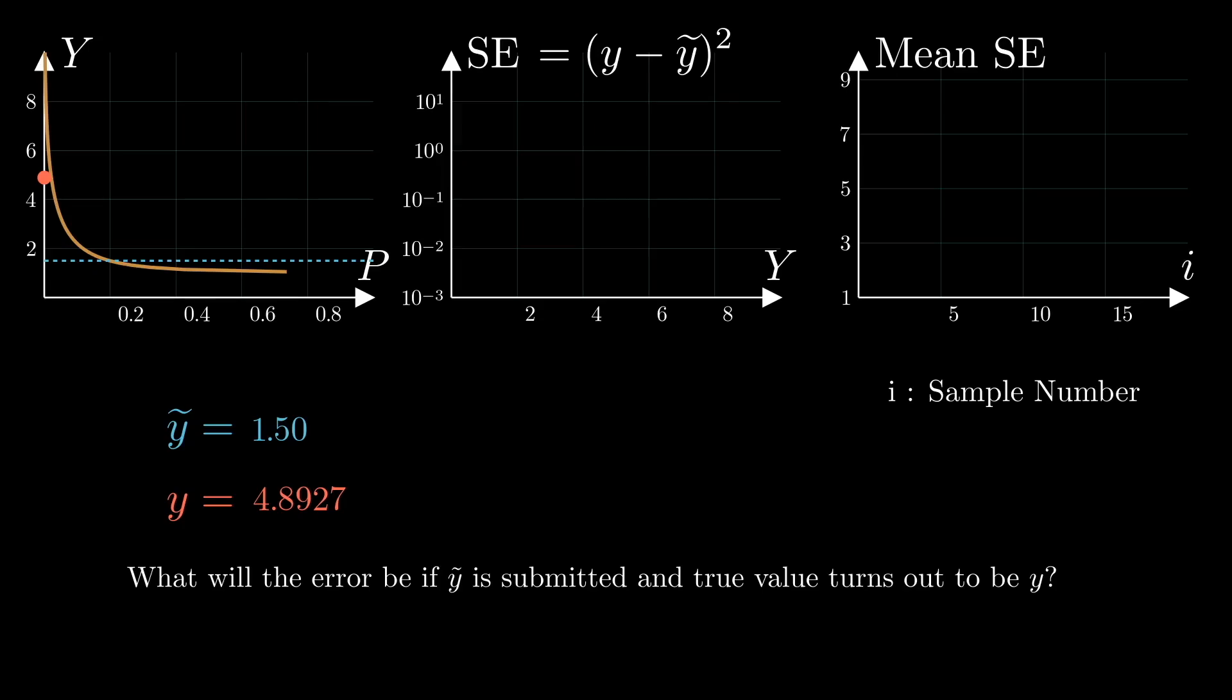So, we first pick a potential decision point, denoted by symbol y tilde. Sample points like the red dot, whose value is denoted by symbol y, and for each y, calculate the squared error between y tilde and y in the middle plot.